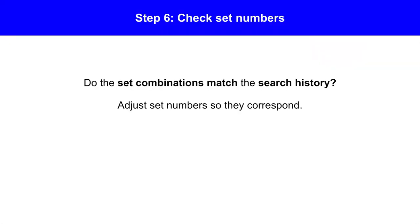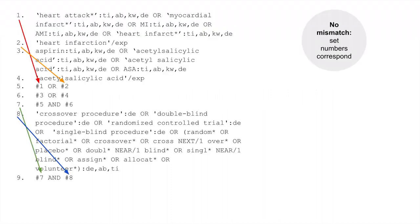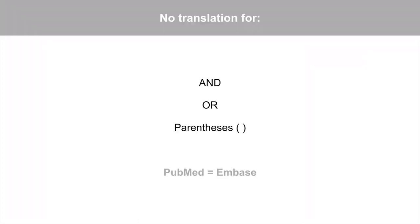In the final step, check the set numbers. Do the set combinations still match the search history? You may need to adjust the set numbers so they correspond. Looking at our set numbers, there is no mismatch — the set numbers correspond. A quick note: the following search operators do not require translation. The AND or AND parentheses operators are the same in PubMed and Embase.